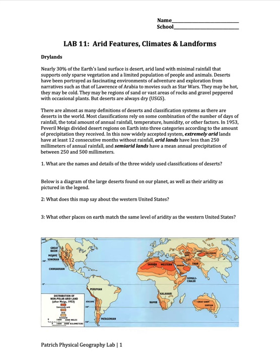We classify our deserts based off of precipitation. We have three values that we identify them off of: extremely arid, lands that have at least 12 months with zero rainfall; arid, having less than 250 millimeters; and semi-arid, which is between 250 and 500 millimeters of precipitation per year.